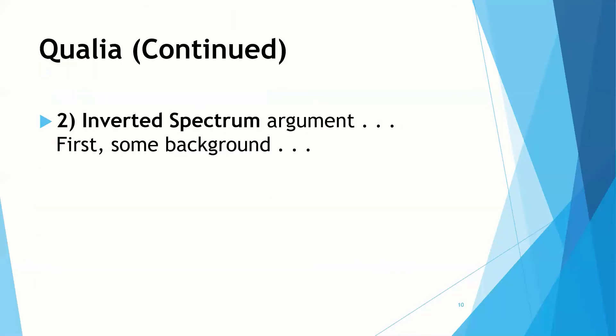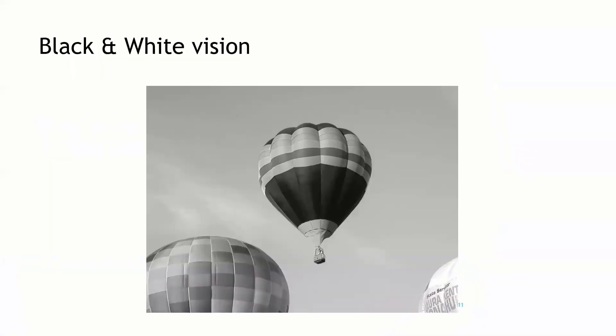A second argument having to do with qualia is related to an inverted spectrum. In order to understand this argument, we need to set ourselves up a little bit, gain some understanding about what an inverted spectrum is. First of all, let's think about this in terms of black and white vision. These are some photos that I took at a balloon rally, and being clever and artistic, I took them in black and white.